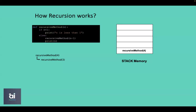When running this function with parameter 3, the system checks whether 3 is less than 1. Since 3 is greater than 1, the else statement is executed, calling the recursive method with parameter 2. The recursive method with parameter 3 is stored in stack memory to come back and execute the print statement after that call.